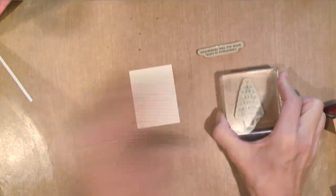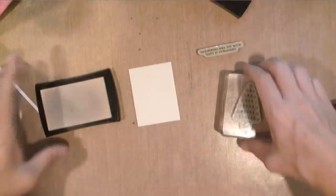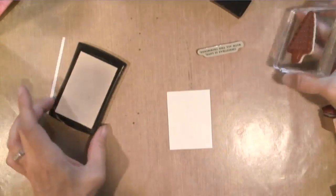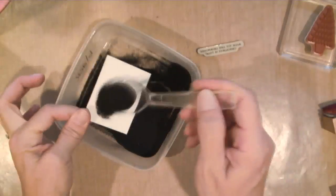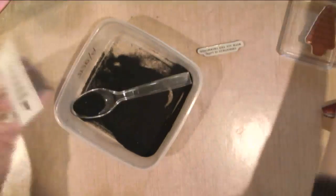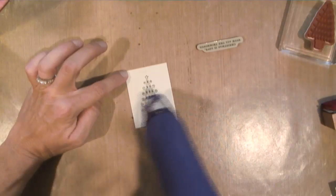So here's my stamp set. I'm going to take an embossing buddy, which removes the static cling from the paper so you don't get stray embossing powder on it, and some Versamark ink, and some black embossing powder. I'm just going to heat it up with my heat tool.